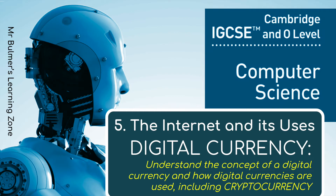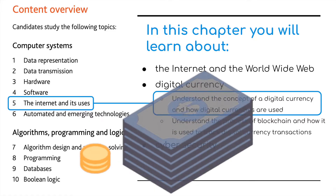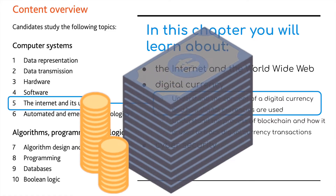Welcome back to another video to support the Cambridge IGCSE and A-level computer science for the syllabus which covers the exams taking place from 2023 to 2025. We are on topic 5, the internet and its uses, and we are looking at digital currency. We need to understand the concept of digital currency and how digital currencies are used.